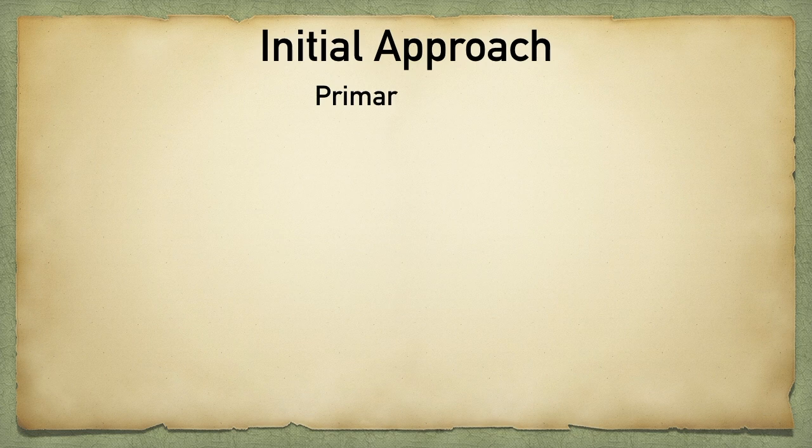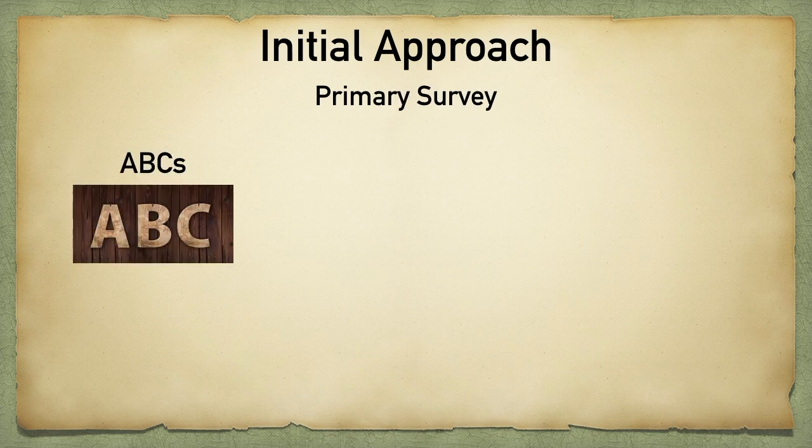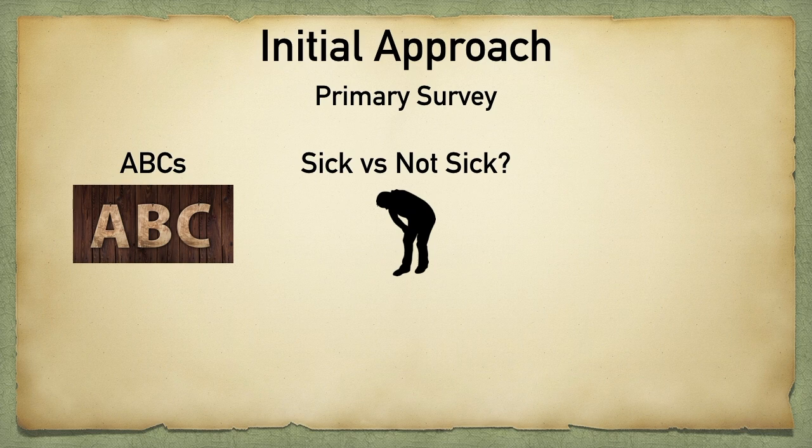The first step with any new patient that presents to you is performing a primary survey. This will include assessing the patient's airway, breathing, and circulation. Airway and breathing are particularly important, especially in shortness of breath, so make sure you adequately assess and take action as necessary. This could include supplemental oxygen, BiPAP or CPAP, breathing treatments, or even intubation if appropriate. Take a look at the patient as a whole — do they appear sick or not sick?